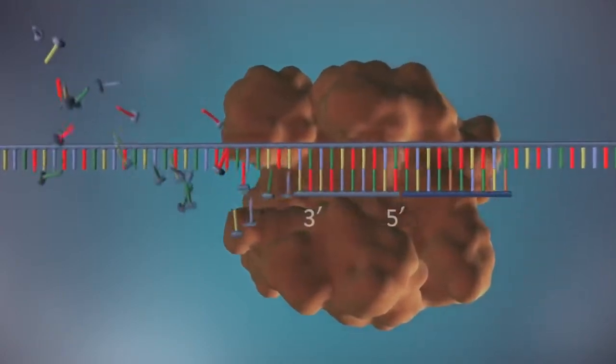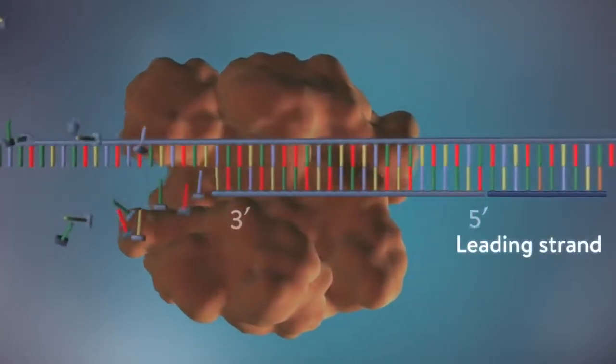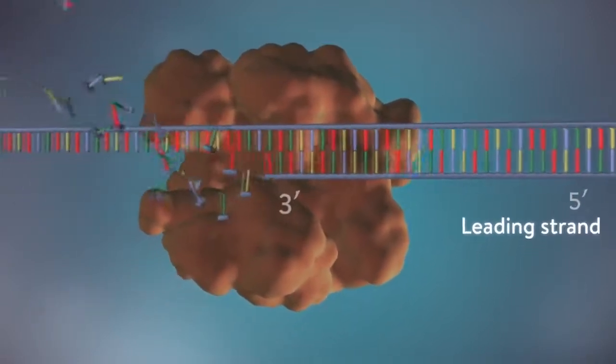One of the new strands of DNA, the leading strand, is made continuously, the DNA polymerase adding bases one by one in the five prime to three prime direction.